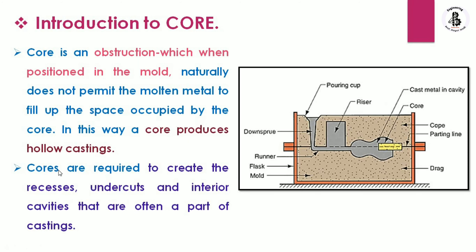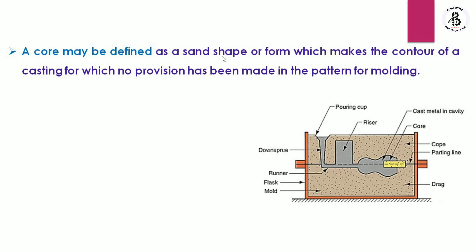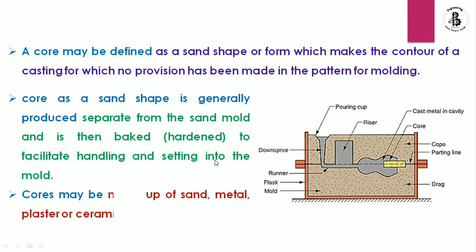Cores are required to create recesses, undercuts, and interior cavities that are often part of a casting. A core may be defined as a sand shape which makes the contour of castings for which no provision has been made in the pattern or sand molding. A core as a sand shape is generally produced separately from the sand mold and is hardened to facilitate handling and setting into the mold. Cores may be made of sand, or sometimes metallic, plaster, or ceramic materials.